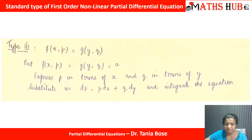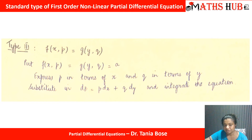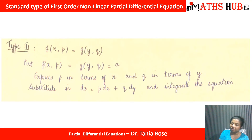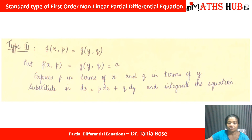Now let us move to the third type: when you have a function in x and P that can be separated from a function in y and Q. From the entire equation, you separate x and P on one side and y and Q on the other side, then set each equal to a constant A. Comparing the first function with A gives P in terms of x, and comparing the second with A gives Q in terms of y. We then substitute into dZ = P dx + Q dy and integrate.